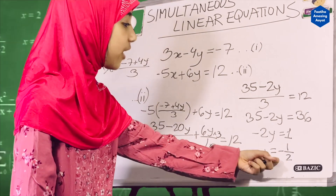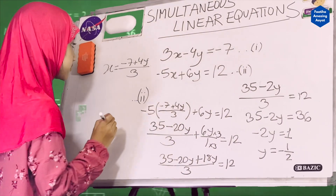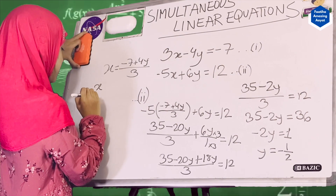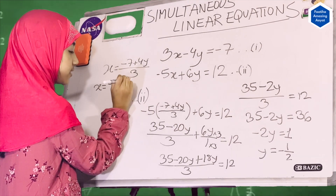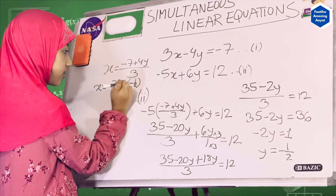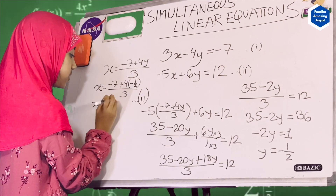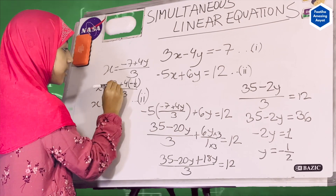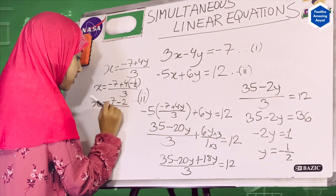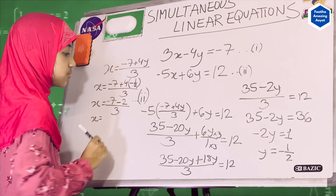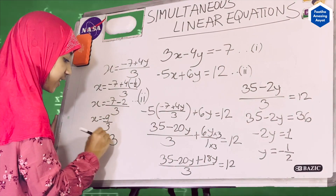Now we'll insert the y value into the x equation to figure out x. So x equals (minus 7 plus 4 times (minus half)) divided by 3. Minus times plus is minus, and 4 over 2 is 2, so x equals (minus 7 minus 2) divided by 3. Minus and minus makes plus, so that's minus 9 divided by 3, giving x equals minus 3.